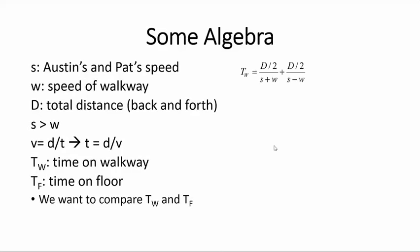T_W can be broken down into two cases: going in the same direction as the walkway and going against or going in the opposite direction as the walkway.